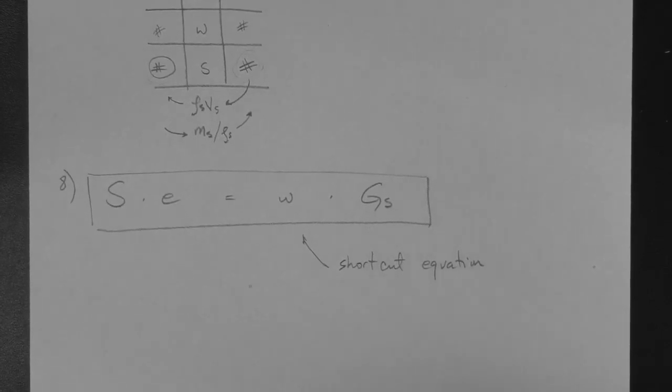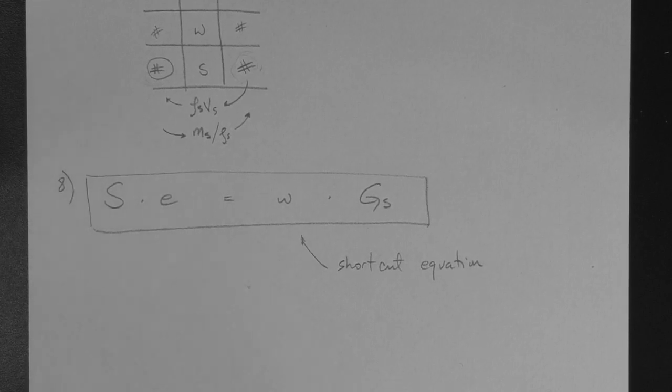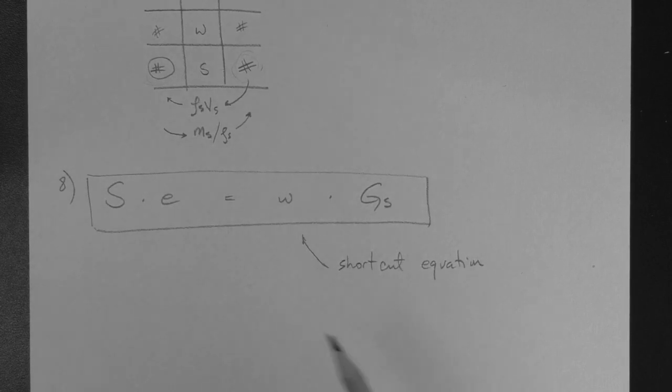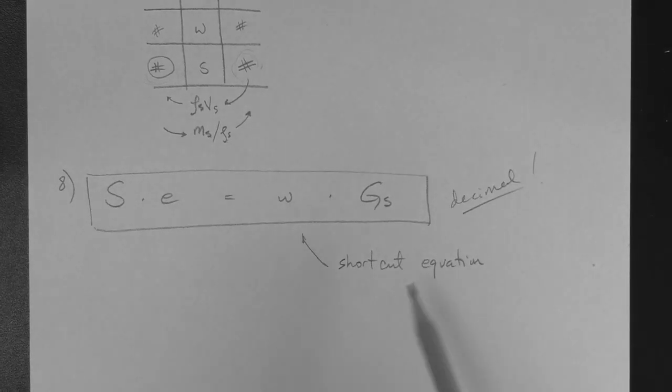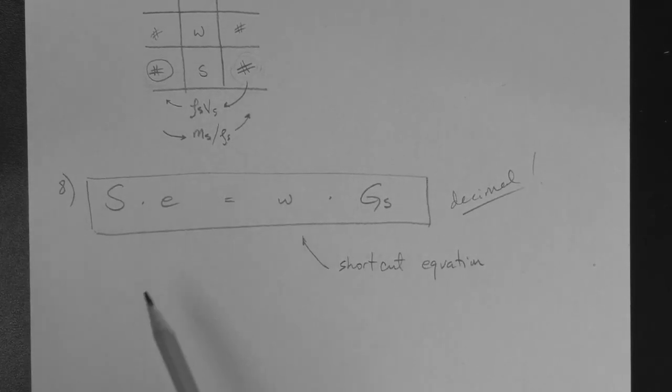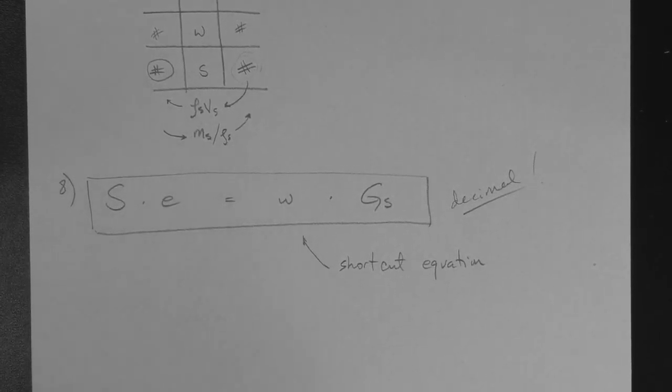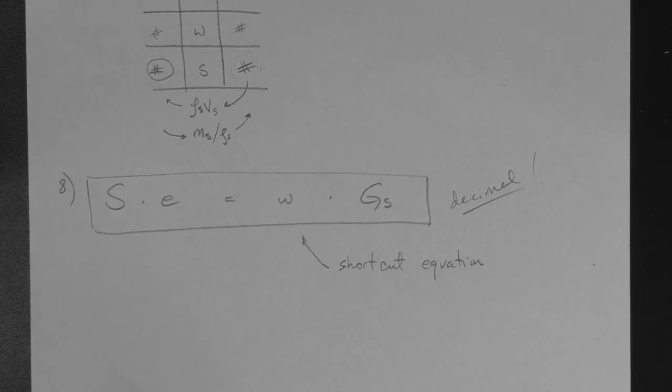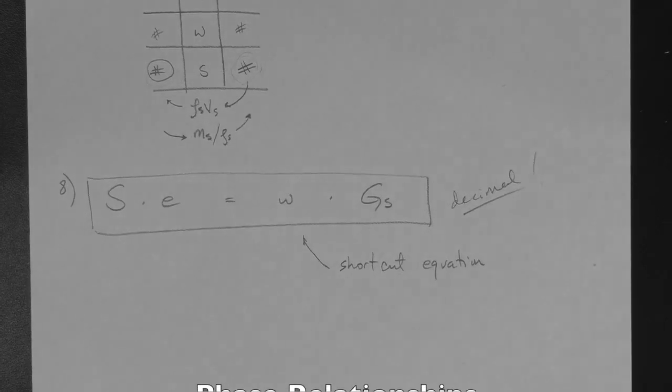Finally, number eight. This is a shortcut equation. I don't recommend that people memorize shortcut equations unless they're very simple. And this is by far the simplest one for phase relationships. Degree of saturation times void ratio equals water content times specific gravity of solids. All in decimal. Use decimals. So, for example, 0.8, 0.6, 0.2, etc. Write for 20%. But don't write 20%, write 0.2. And so, if you begin a phase relationship problem, as a strategy, you may find that it simply involves the use of this equation. You can solve the problem simply by using this equation and then proceed to the next problem, for example, in a test.